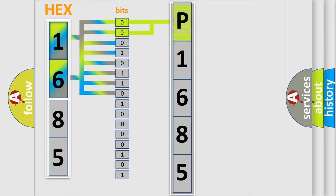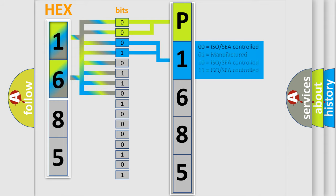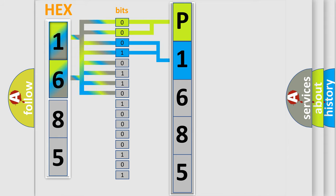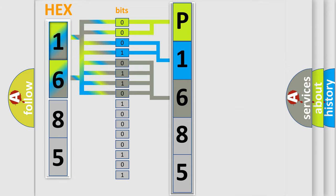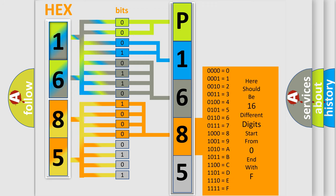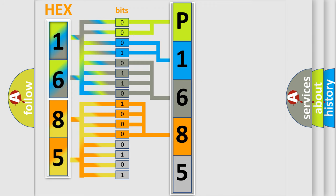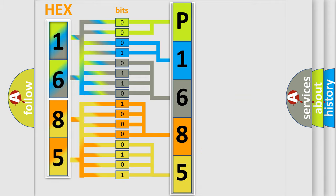By combining the first two bits, the basic character of the error code is expressed. The next two bits determine the second character. The last bits of the first byte define the third character of the code. The second byte is composed of a combination of eight bits: the first four bits determine the fourth character, and the combination of the last four bits defines the fifth character. A single byte conceals 256 possible combinations. We now know in what way the diagnostic tool translates the received information into a more comprehensible format.